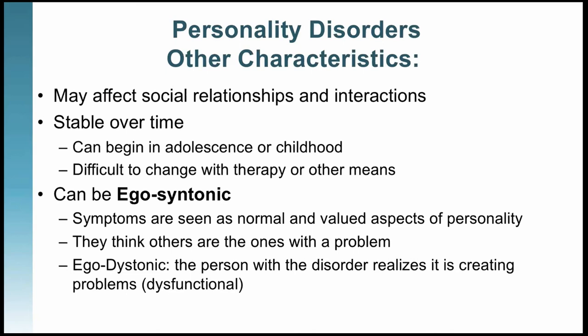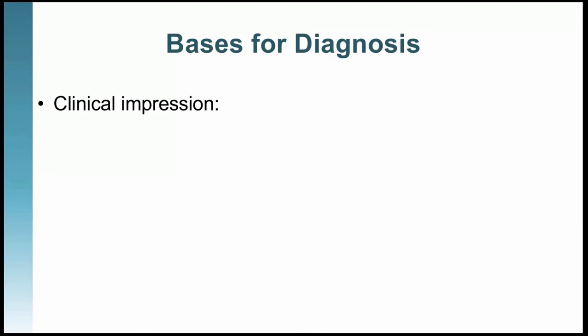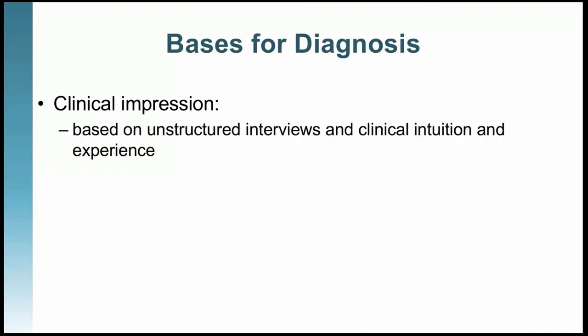The basis for personality disorder diagnosis right now is clinical impression — whether the clinician, a PhD psychologist, therapist, or social worker, believes you have a personality disorder. This is often based on intake interviews, but really it's clinical intuition. Many clinicians say they can spot someone with borderline or narcissistic personality disorder in just a few minutes because they've seen it so many times. Clinicians argue they're just using common sense, and once you know the characteristics of each disorder, it's easy to identify.